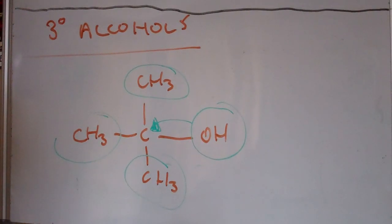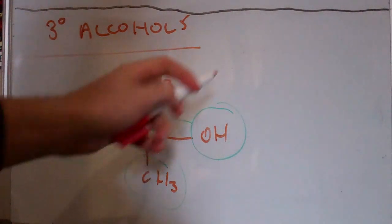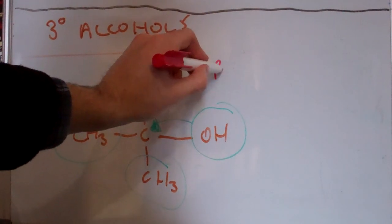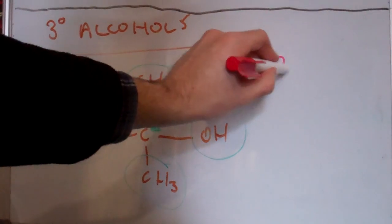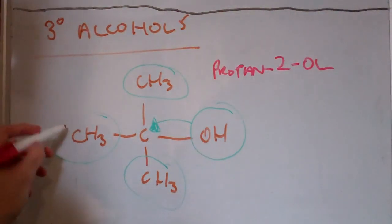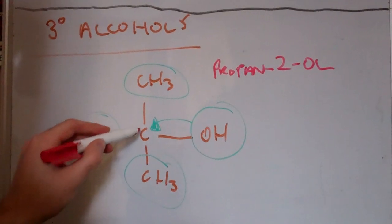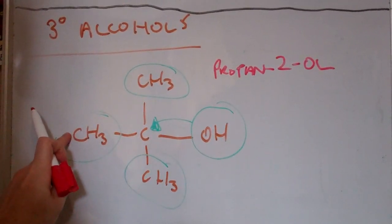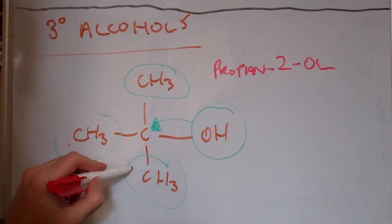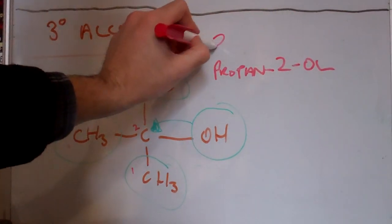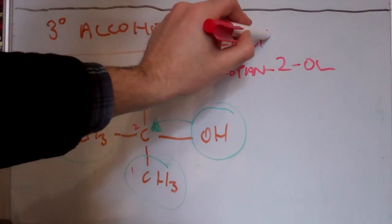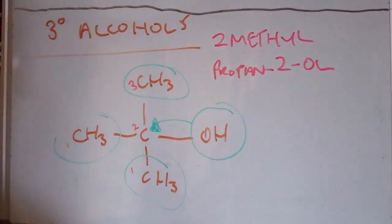If you want to name this one, you're looking at three carbons. So this is propan-2-ol again, on the second carbon — one, two, three — we've got a methyl group. So this would be 2-methyl propan-2-ol.